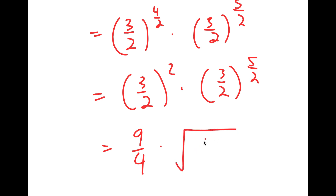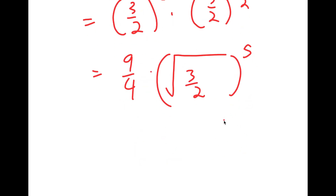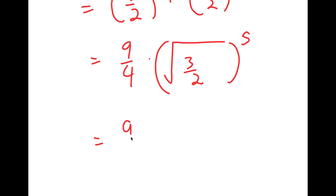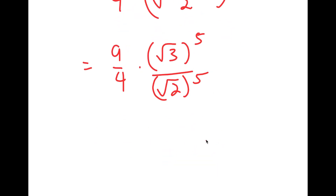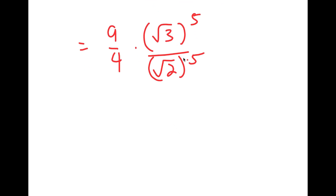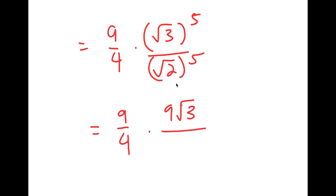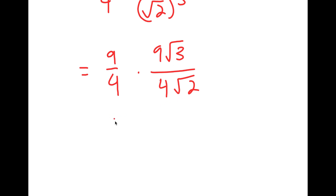That is the same thing as the square root of 3 over 2 to the power of 5. This is equal to 9 over 4 times the square root of 3 to the power of 5 over the square root of 2 to the power of 5. The square root of 3 to the power of 5 is equal to 9 root 3, and you can get this by simply multiplying the square root of 3 five times. And the square root of 2 to the power of 5 is equal to 4 root 2. So I have 9 over 4 times 9 root 3 over 4 root 2, which is equal to 81 root 3 over 16 root 2.